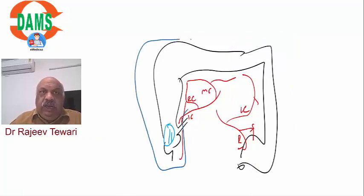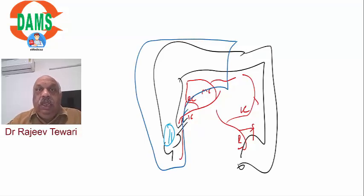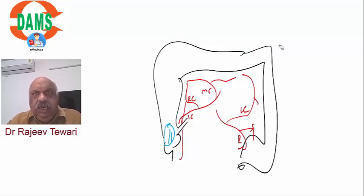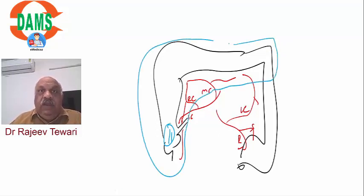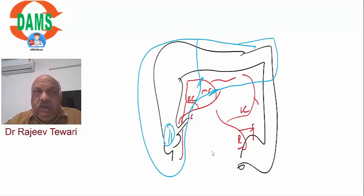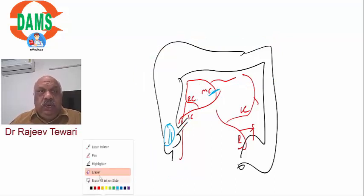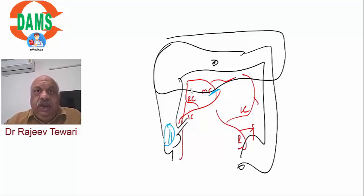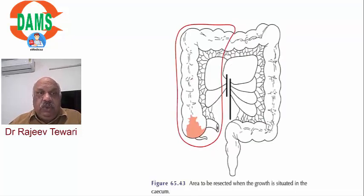In right extended hemicolectomy, if we only go to the left branch of the middle colic, the splenic flexure will be left behind - which is an ischemic area. That is not wise surgery because ischemia leads to leaks and strictures. So we include the splenic flexure and cut the main trunk of the middle colic. Only three surgeries are preferred: right, right extended, and left hemicolectomy - transverse colectomy is not preferred.